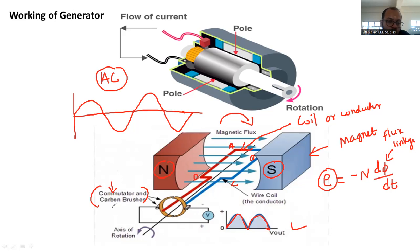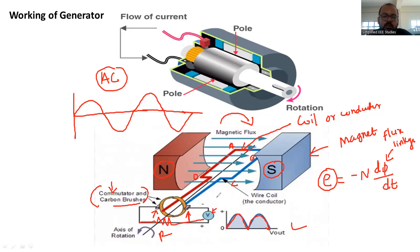In order to connect the generator to an external load, we use brushes. Brushes are used to connect the generator output to the external load — you can use any resistive load. You can also measure the voltage across it using a voltmeter. So, with the help of the commutator, you can convert the fluctuating EMF into a unidirectional voltage, and this is the basic operation of the DC generator.